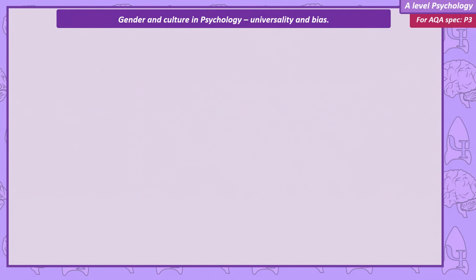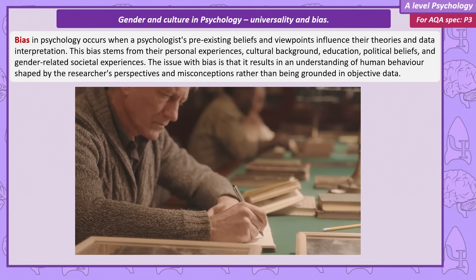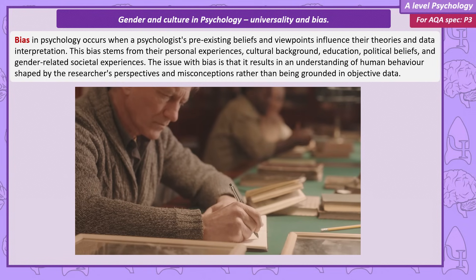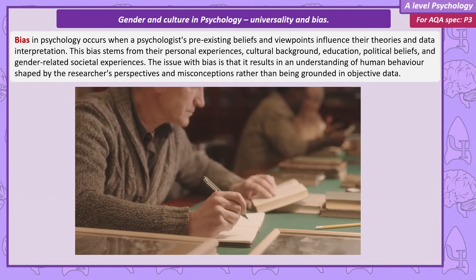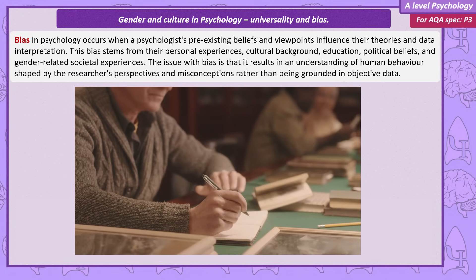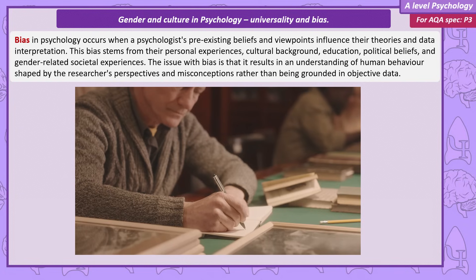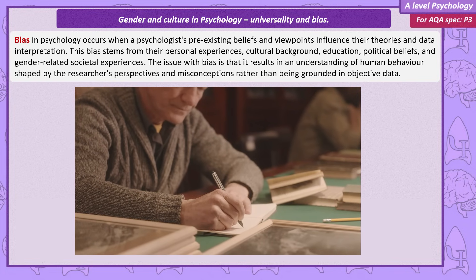Back to bias. We would say psychologists are biased if they allow their pre-existing views of the world to influence the theories they construct and how they interpret the data they collect. These assumptions come from the psychologist's personal experience, including the culture they grew up in, their educational background, political viewpoints, and their experience of living as a certain gender in their society. Ultimately, the problem with bias is it leads to an invalid understanding of human behaviour, one that's based on the perspective and misconceptions of the researcher rather than on objective data. There are of course many types of potential bias, but in this video we need to focus on gender bias and culture bias.